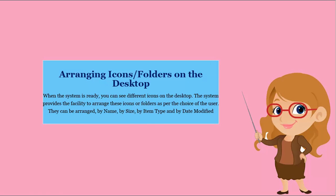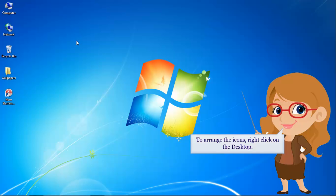Arranging icons and folders on the desktop. When the system is ready, you can see different icons on the desktop. The system provides the facility to arrange these icons or folders as per the choice of the user. They can be arranged by name, by size, by item type, and by date modified.